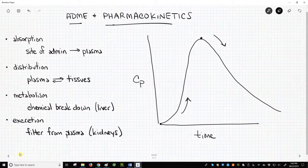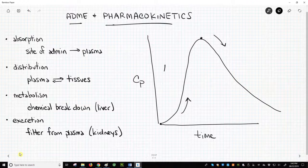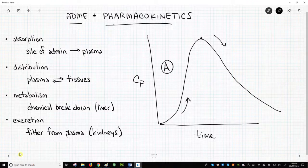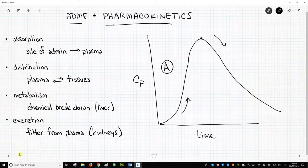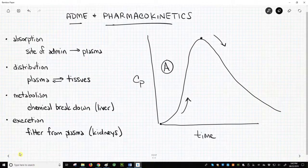Therefore, absorption tends to dominate the early part of the CP time curve. Metabolism and excretion dominate the later part.